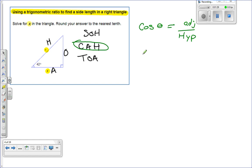So that means cosine of 42 degrees is going to equal our adjacent, which in this case is 6, divided by x, which we don't know. We're going to try to find out what x is.